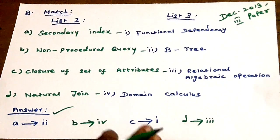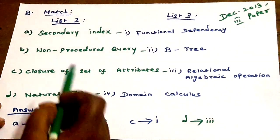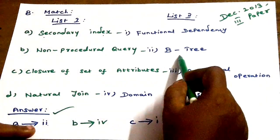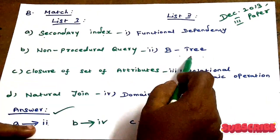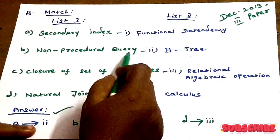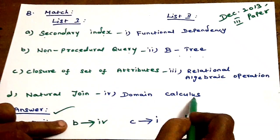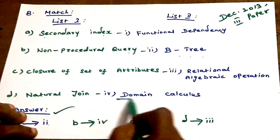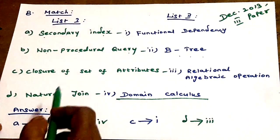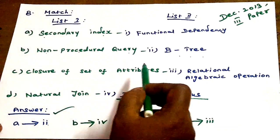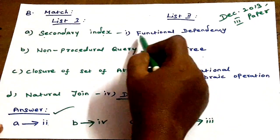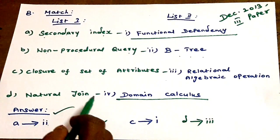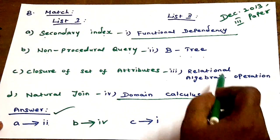Next, match the following. Secondary index — answer: B3. Non-procedural query — answer: domain calculus. Keyword mark: non-procedural query matches domain calculus. Closure of a set of attributes — answer: functional dependency. Natural join — answer: relational algebraic operations.